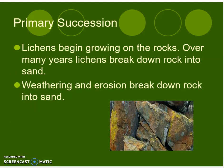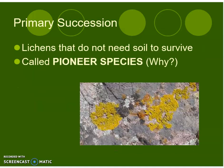During primary succession, lichens begin growing on the bare rock. Over many years, lichens break down rock into sand. Weathering and erosion break down rock into sand as well. Lichens that do not need soil to survive are called pioneer species. You look in the picture here — this is an example of lichens.